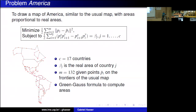We want to find new points P_i that are close to the original points P_i-bar, so we minimize the sum of squared Euclidean distances. The constraint is that the area of each country is preserved. The area formula is the Green-Gauss formula, which converts a double area integral into a contour integral over the polygon vertices. Each point P_i has an x- and y-coordinate, and summing over all vertices defining a country should give the target area beta_j.